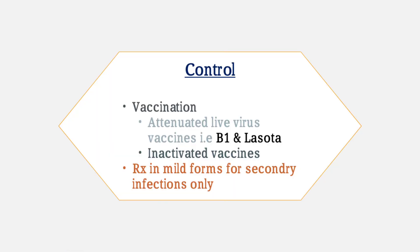Disease control through vaccination: two types of vaccines are available — attenuated live virus vaccines (B1 and LaSota strains) and inactivated vaccines. For mild forms, treatment of secondary infections can be done supportively, but there is no direct antiviral treatment for the virus itself.